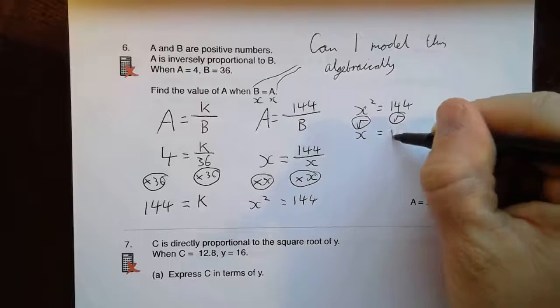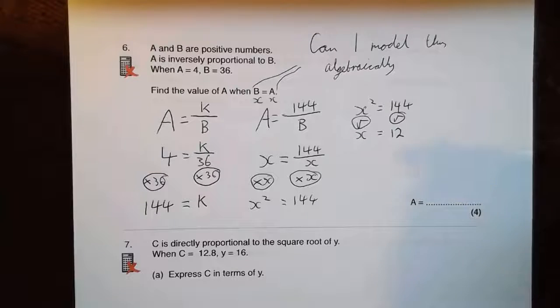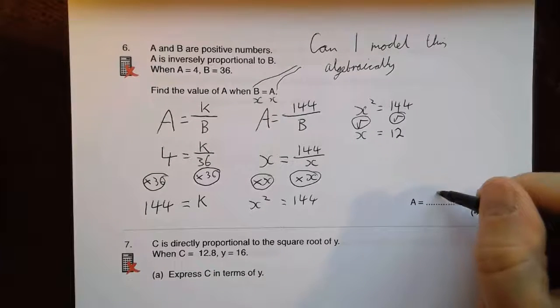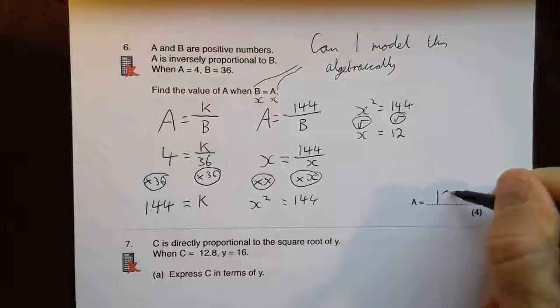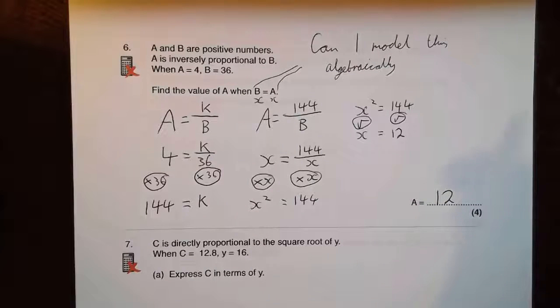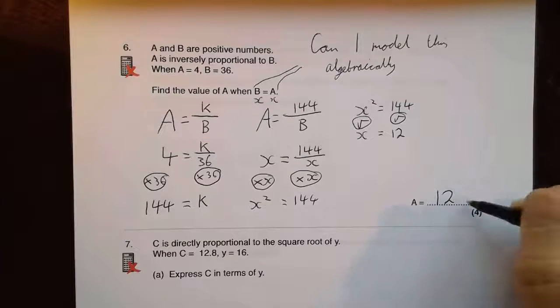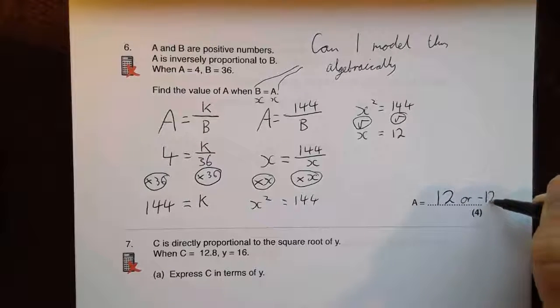So x is equal to 12. Which means A is 12 when B is 12. So A equals 12. Or minus 12, I suppose. If we're going to get technical, so 12 or minus 12.